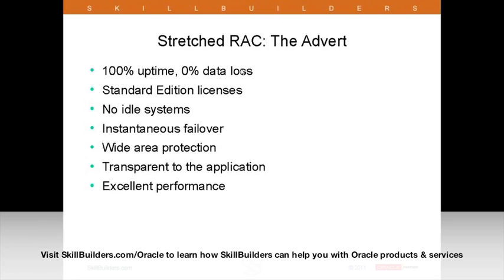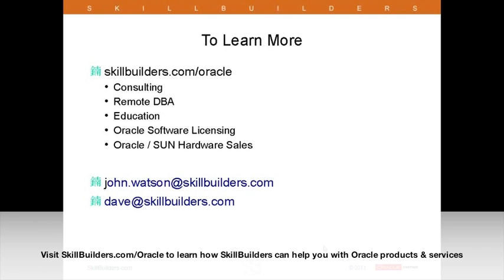What does it give you? 100% uptime, zero data loss. The cost savings can be phenomenal — remember my figures: $280,000 down to perhaps $37,000. There are no idle systems, instantaneous failover, and wide area connection. Your application should be completely transparent to this because anything to RAC is theoretically transparent to the application. The forms should be excellent. I'm going to pass back to Dave, who will go through a couple more things. If there are any questions, we can deal with them. Thank you for listening.